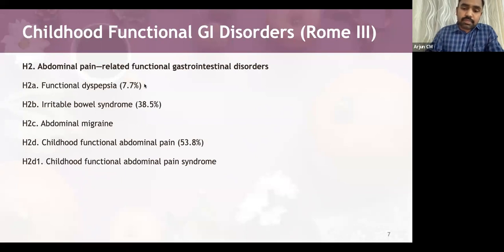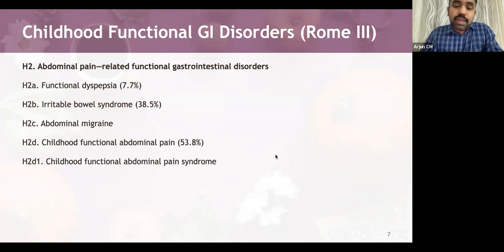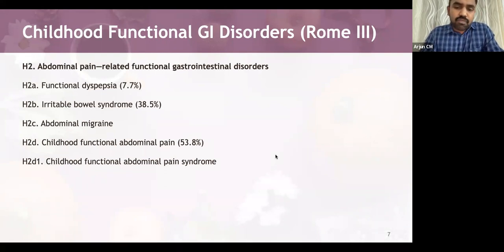Abdominal migraine involves paroxysmal episodes of intense acute peri-umbilical pain lasting about one hour or more. Between episodes, the child is usually healthy, which may last several weeks to months. Pain interferes with normal activities, and there may be associated features of migraine such as anorexia, nausea, vomiting, headache, photophobia, and pallor.